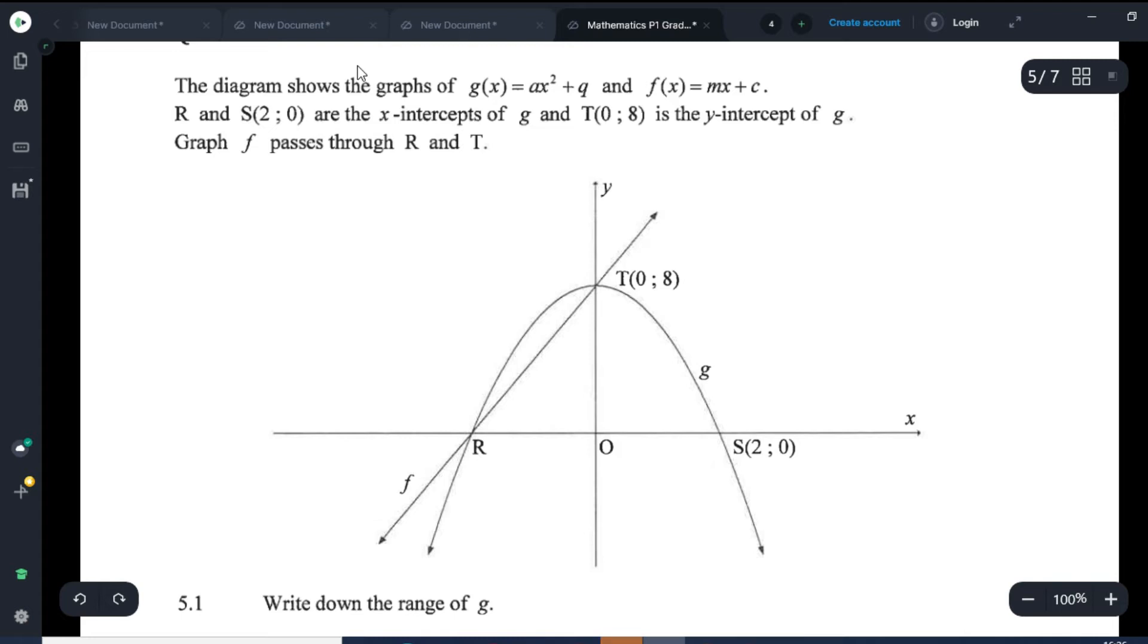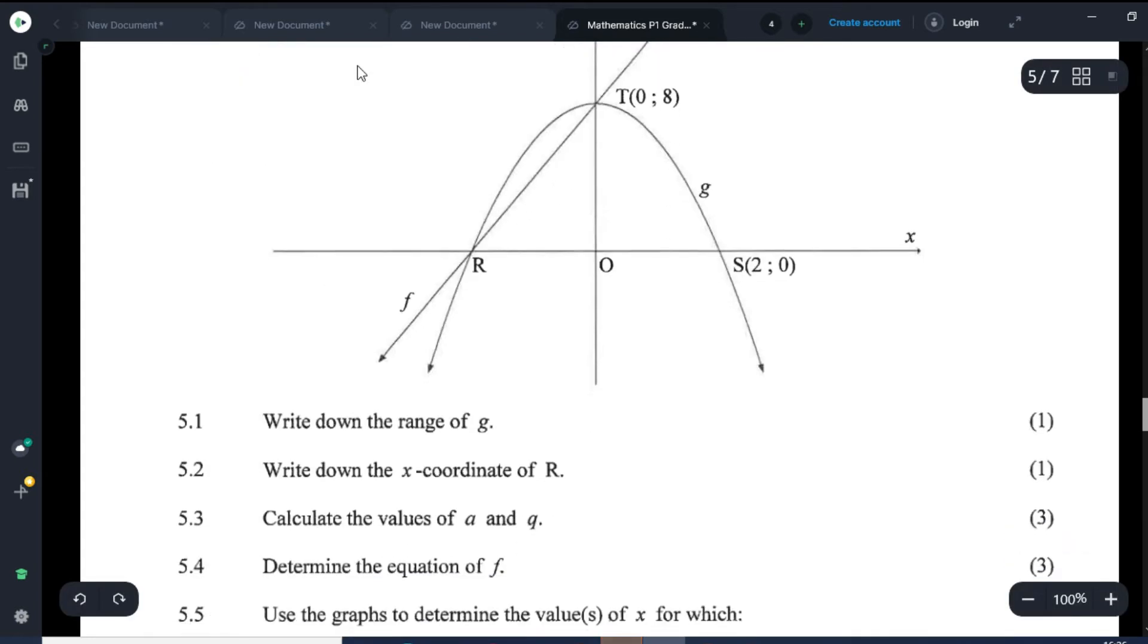Let's read the question together. The diagram shows the graphs of g of x equals ax squared plus q, that's the general form, f of x equals mx plus c, that's a straight line graph, r and s are the intercepts of g and t is the y intercept of g. Very critical information. Graph of f passes through r and t, so those are the roots, not the roots but the intercepts of f.